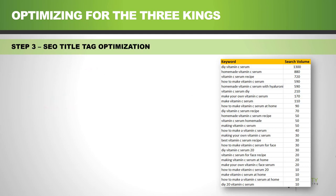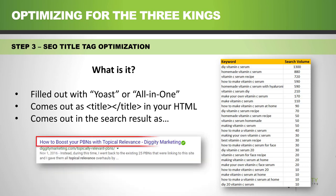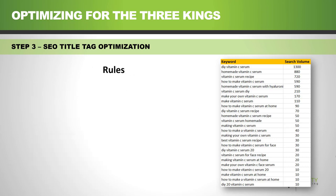Now let's talk about the SEO title tag. What is it? This is the title that you fill out using your SEO WordPress plugins like Yoast or All-in-One. In the HTML it appears between the angle-bracket title tag elements. It's also what's displayed in the actual Google result when your site comes up in the listings.